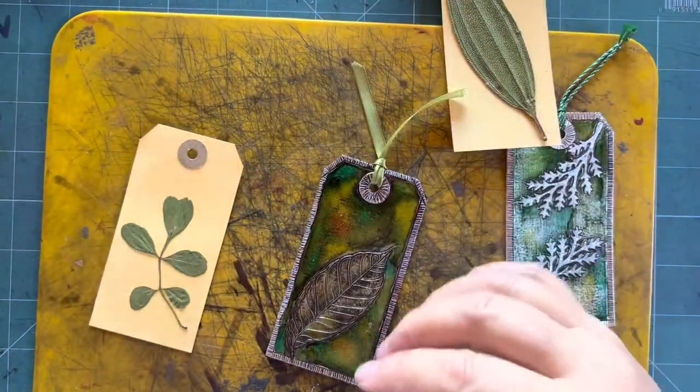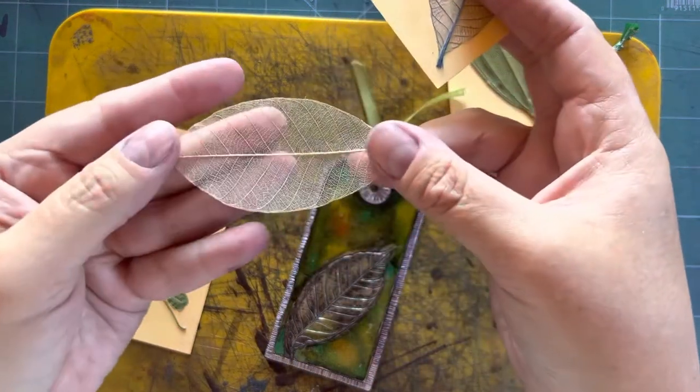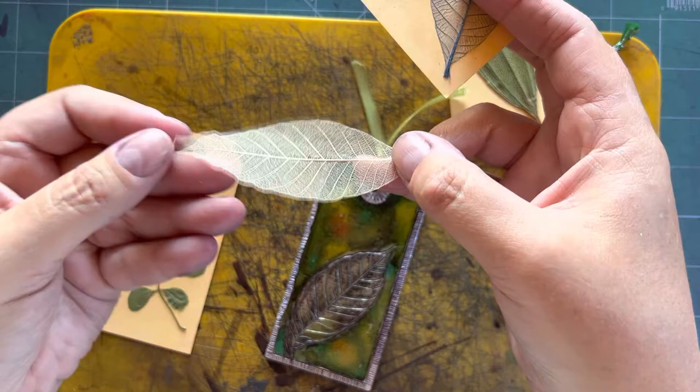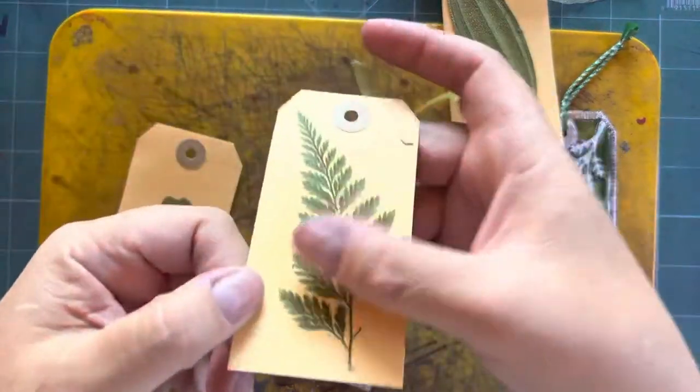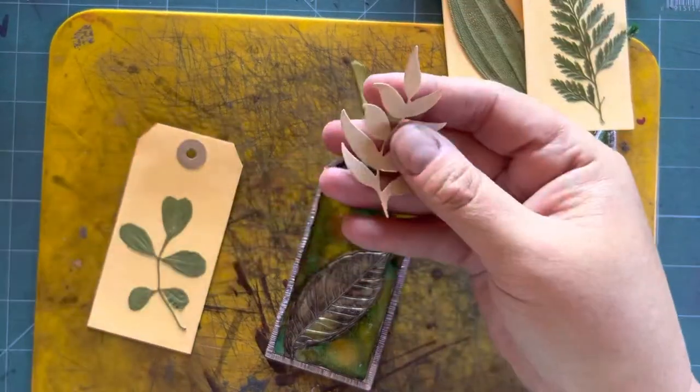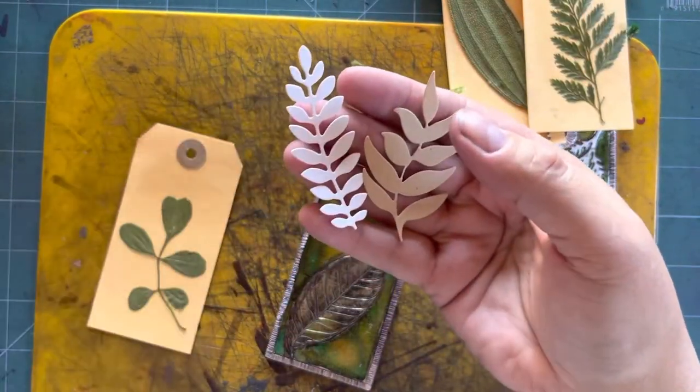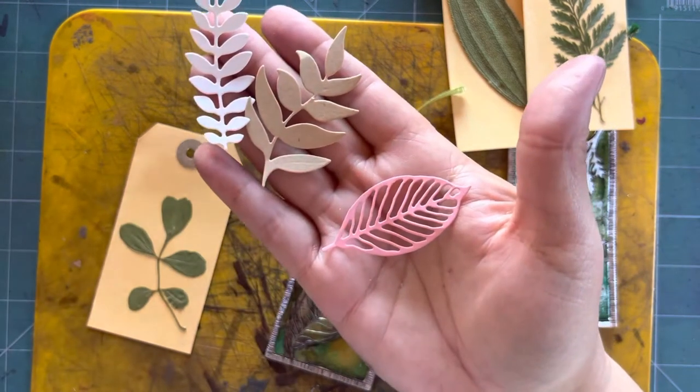And then if you don't have leaves we have skeleton leaves. I love these, they work really well. And here I have a little fern, very very fine. And then if you don't have any of those or you can't go in the garden because it's winter or you've got snow, you can always use your die cuts which work really well.